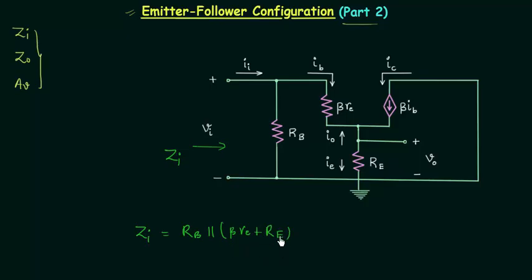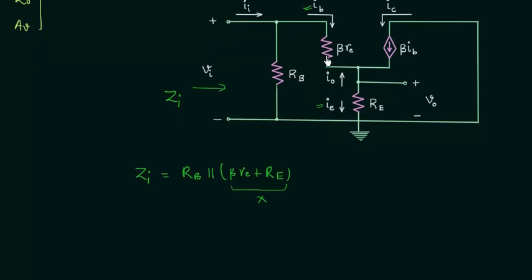This would mean beta*r_e and RE are connected in series, but this is not true. In a series combination the current is the same through all resistors — that is the definition of series combination. However, the current through resistance beta*r_e is equal to IB, whereas the current through resistance RE is equal to IE. So the current is not the same, meaning these two resistors are not in series. To treat them as series we need to perform a few modifications.